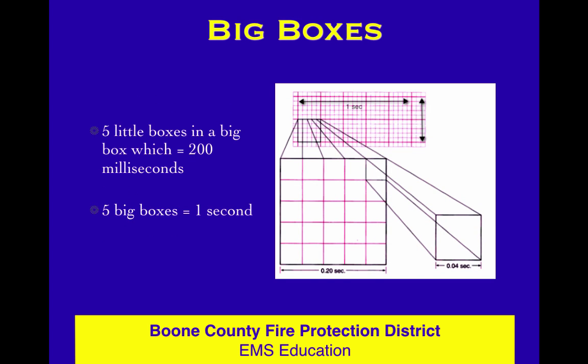There are five little boxes in a big box, so 40 times 5 is 200 — a big box equals 200 milliseconds. The intervals you'll want to measure really come down to two numbers to remember: 120 and 200. 120 milliseconds is the width at which a QRS is determined to be wide. The PR interval range is 120 to 200 milliseconds. So: three little boxes equals 120 milliseconds, and five little boxes — one big box — equals 200 milliseconds.